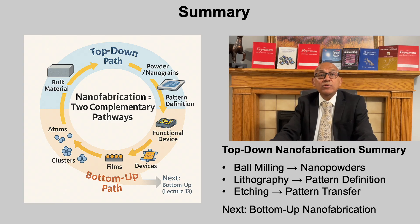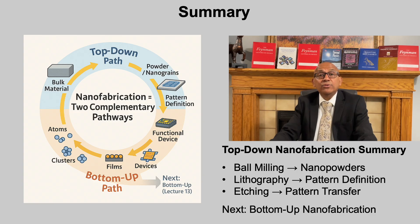In this lecture, we explored how top-down nanofabrication transforms bulk materials into nanoscale structures through removal and patterning. Ball milling provides a mechanical route to produce nanocrystalline powders. Lithography defines patterns with nanometer precision, and etching transfers those patterns into functional materials. Each method serves the same overarching goal: precise control of matter at extremely small dimensions. In the next lecture, we will examine bottom-up nanofabrication, where atoms and molecules assemble spontaneously into ordered nanostructures, completing our view of how nanoscale materials are both formed and controlled.